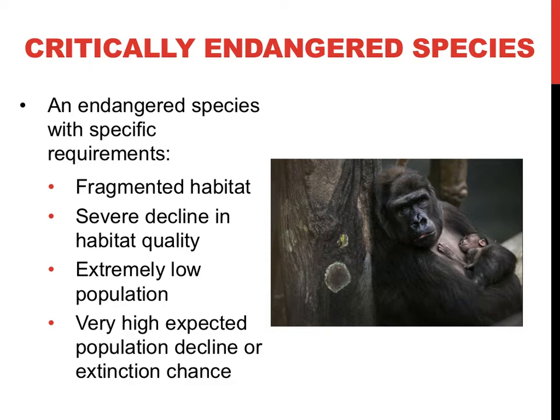Another requirement for a critically endangered species is having a severe decline in habitat quality. If the only habitat for an Asian elephant is a rainforest being harvested for wood, the elephant would face additional obstacles and would be at a much higher risk of going extinct in the near future. Extremely small populations are also very susceptible to extinction, which can be caused by increased incidence of inbreeding and susceptibility to disease. Finally, populations with very high projections for population decline or a high projected risk of extinction may also qualify an organism for the critically endangered status.